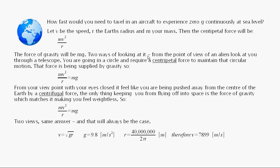So let's suppose your speed is v, and r's the radius of the Earth, and m is your mass. Then the centripetal force is going to be mv² over r. That's what you need to keep you going in a circle around the Earth. And they've got two ways now of looking at it. From the point of view of an alien, looking through a telescope at you from some distant planet, you're going in a circle. Because you're going in a circle, you're going to require a centripetal force to maintain that circular motion. And that centripetal force is being supplied by gravity, so you know mv² over r is equal to mg. There's a centripetal force there, it's got to equal mg.